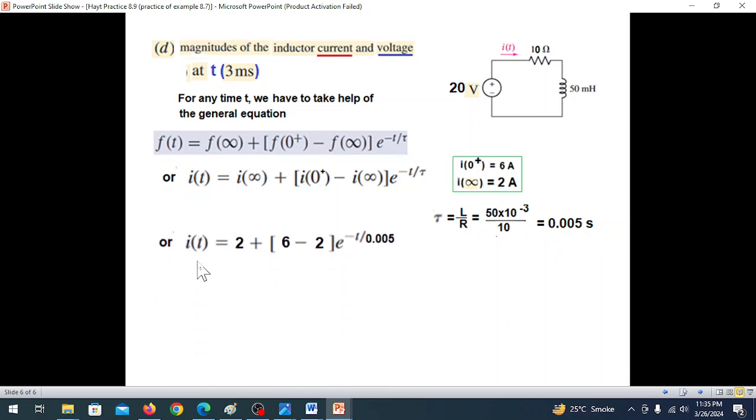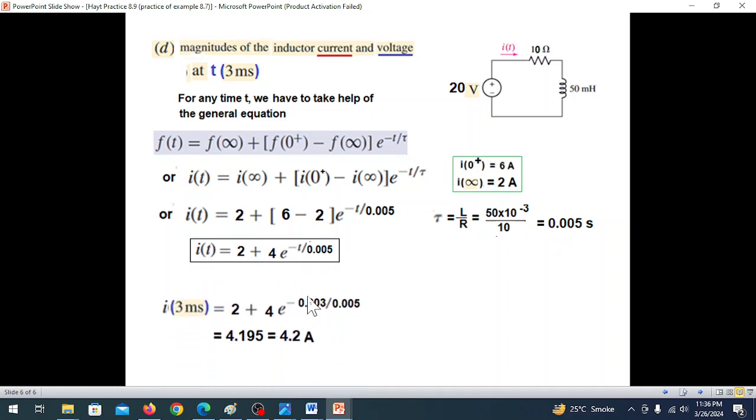So i(t) = 2 + (6-2)e^(-t/0.005). At t=3ms = 0.003 seconds, i(3ms) = 2 + 4e^(-0.003/0.005) = 2 + 4e^(-0.6). With calculator, this equals approximately 4.195 or 4.2 amperes.